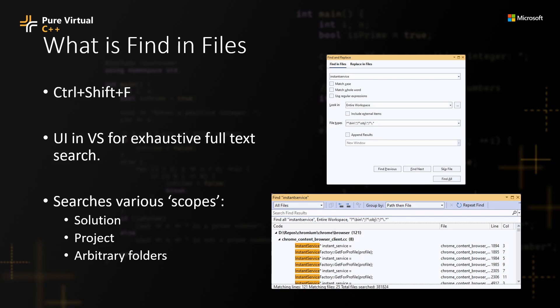What is Find in Files? Find in Files, or Ctrl+Shift+F as you may know it, is a UI in VS for exhaustive full-text search.